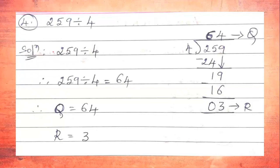For 19, we need a number equal to or less than 19 from the 4-table: 4×4=16, 4×5=20. Since 20 is greater than 19, we take 4×4=16. From 9 subtract 6 gives 3, and 1−1=0. On dividing 259 by 4 we get remainder 3 and quotient 64. Therefore 259 ÷ 4 = 64, where Q = 64 and R = 3.